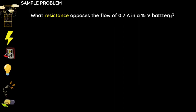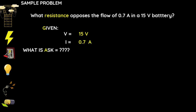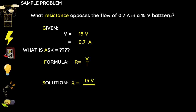For the last sample problem: what resistance opposes the flow of 0.7 amperes in a 15 volt battery? Given: voltage = 15 volts, current = 0.7 amperes. Formula: resistance equals voltage divided by current. Solution: 15 volts ÷ 0.7 amperes = 21.43 ohms.